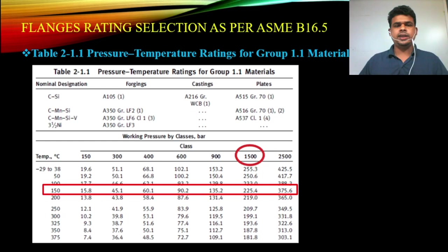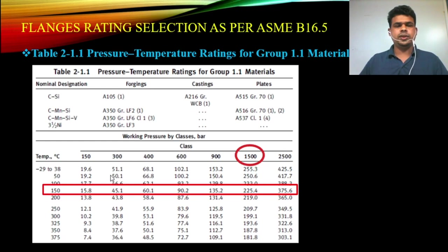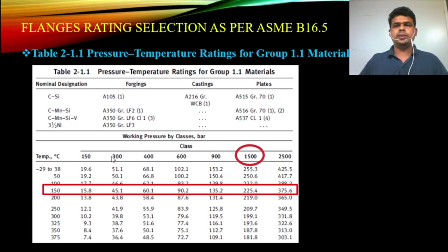Another example: if the design temperature is 50 degrees Celsius and the design pressure is 50 bar, which flange rating should be used? Looking at the table at 50 degrees Celsius, class 300 gives 51.1 bar, which is more than 50 bar. So you can use a 300-pound flange for this condition.